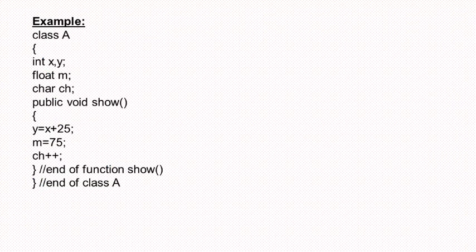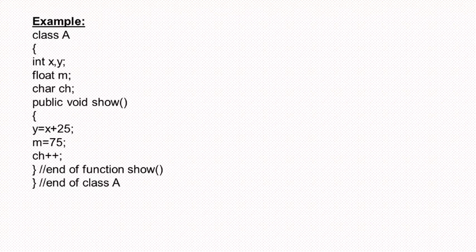In the example, there is a class A in which the variables x and y are of integer type, another variable M of float type, and another variable ch of char type — these are the member variables of class A. There is a function show whose return type is void and the access specifier is public. Inside it, we are accessing the member variables of the class: y equals x plus 25, m equals 75, and ch plus plus. This function show is accessing the member variables of the class. Then we end the function show and end class A. This is how various variables and functions are declared inside a class.